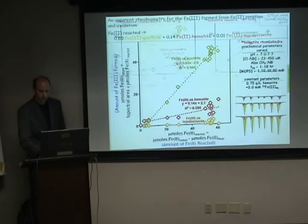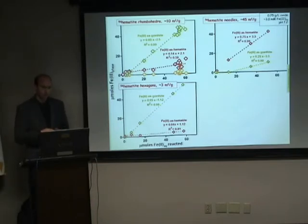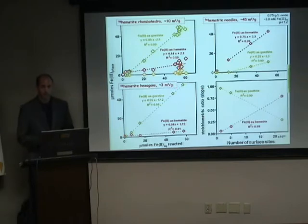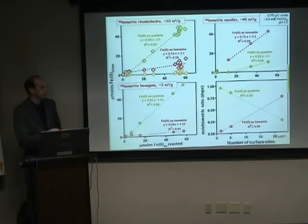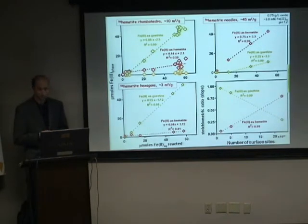This graph can be considered a parent stoichiometry for this kind of reaction. On hematite rhombohedra, about 85% of Fe3+ formed as goethite; on needles, about 25%; and on hematite hexagons, about 95%. The underlying oxide substrate can dictate the proportion of these new Fe3+ phases. The best descriptor was the number of surface sites: at low surface sites, there is a high likelihood of Fe3+ being governed into a new iron phase; whereas, as more reactive surface sites are present, hematite has a much greater chance of continuing its growth instead of secondary goethite forming.